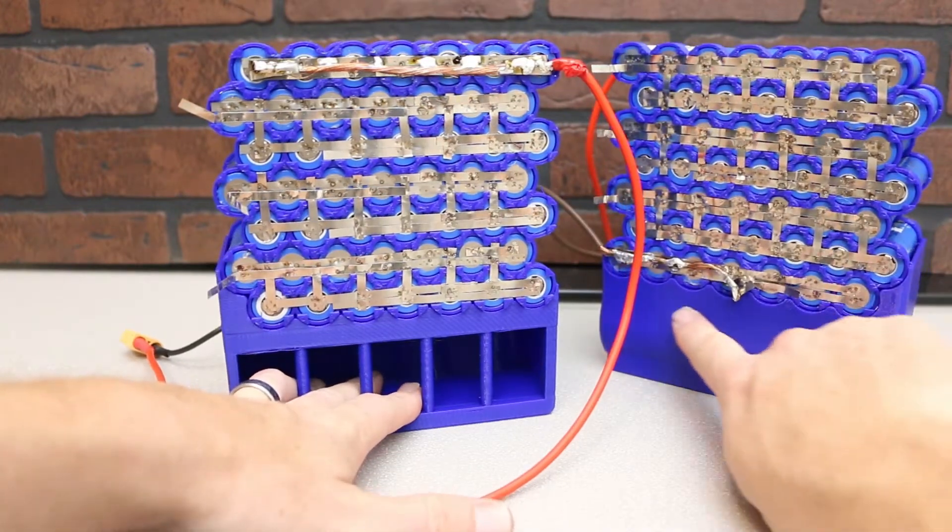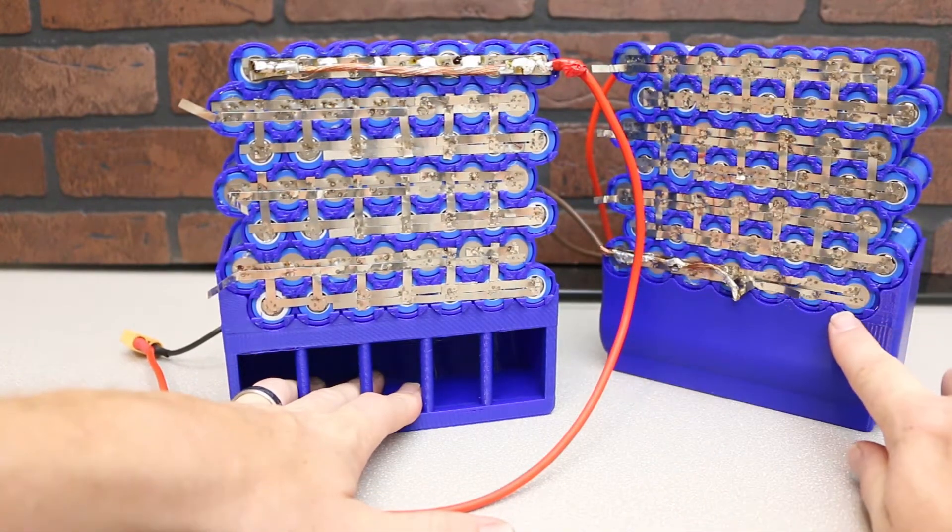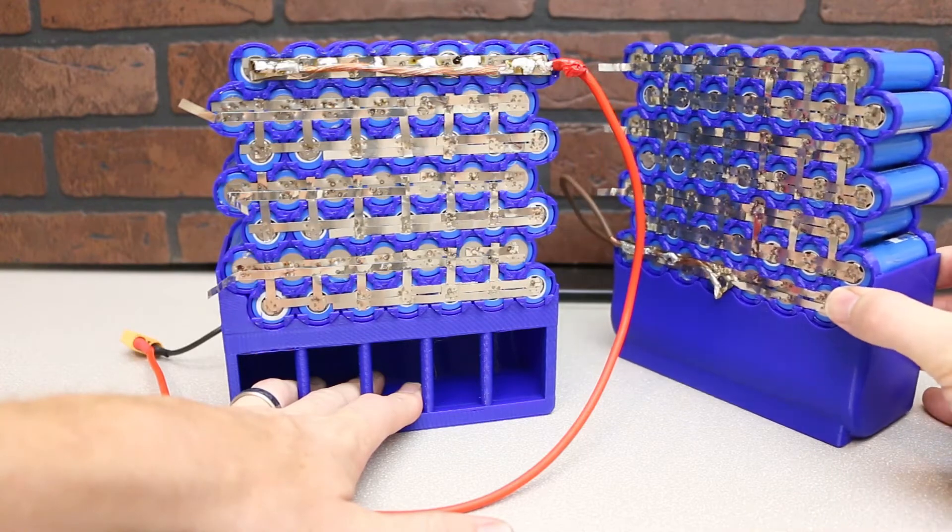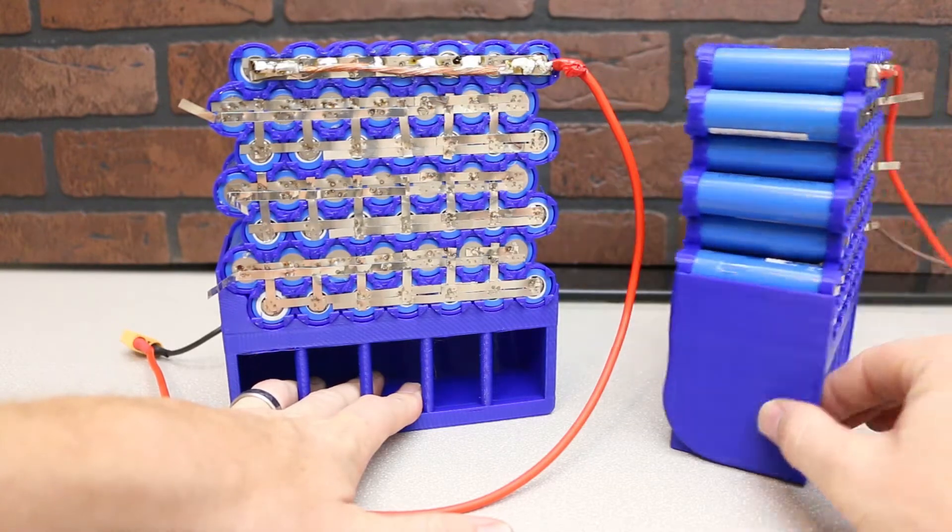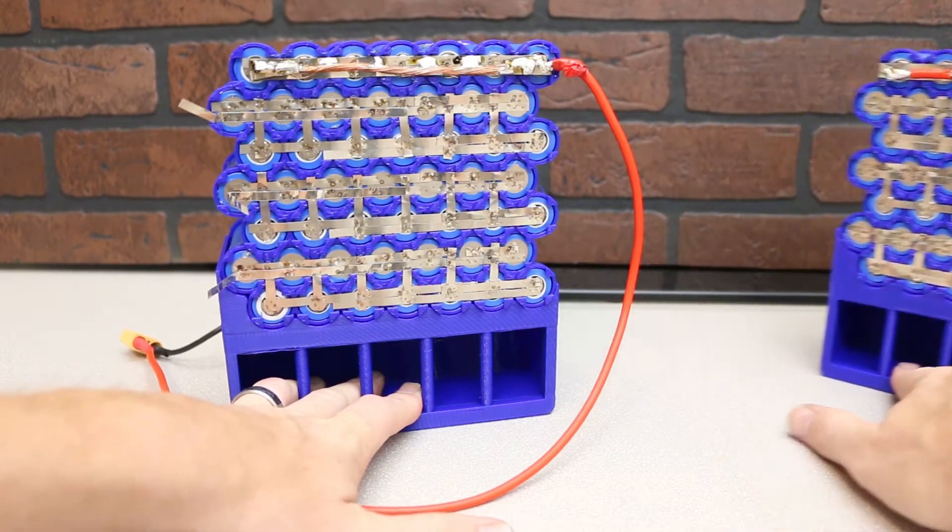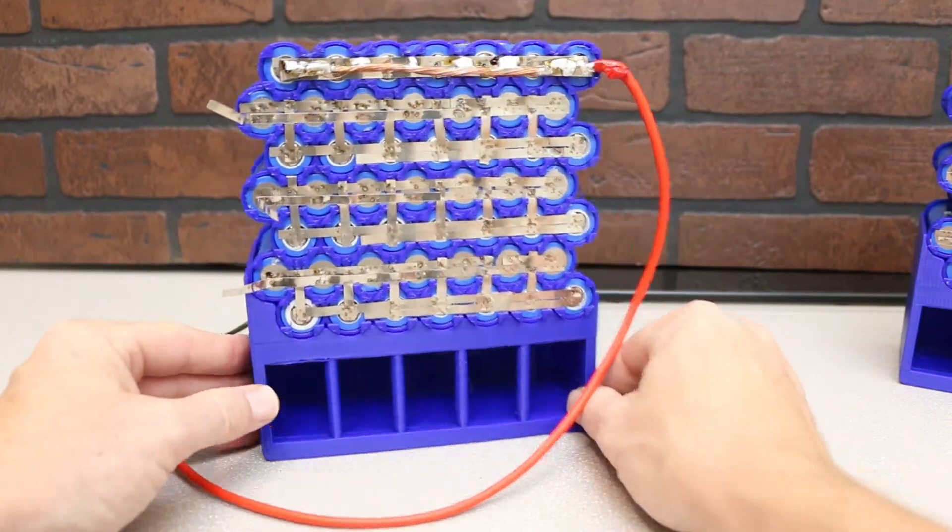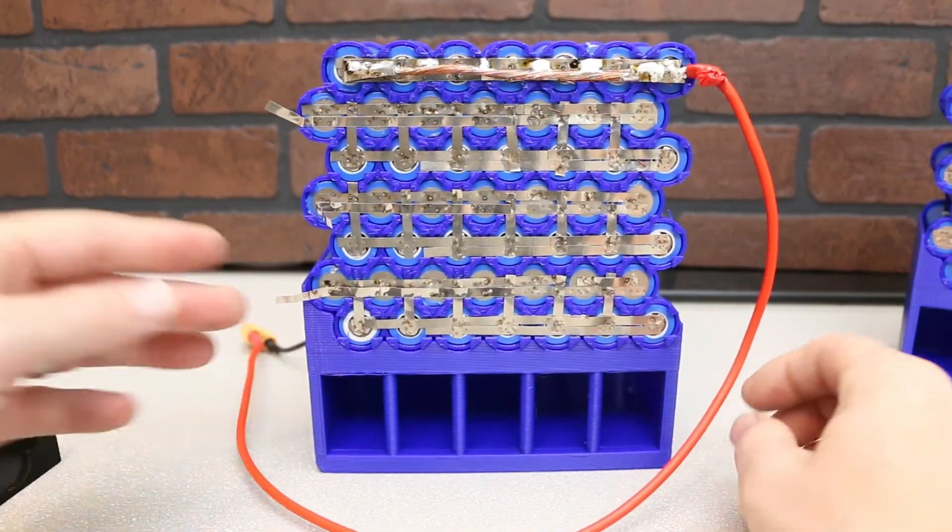I think I'm gonna go ahead and just JB weld or some sort of epoxy there. I got a lot of comments about the hot glue, and I've also been using JB weld recently, so I think I'm gonna make it quite permanent.